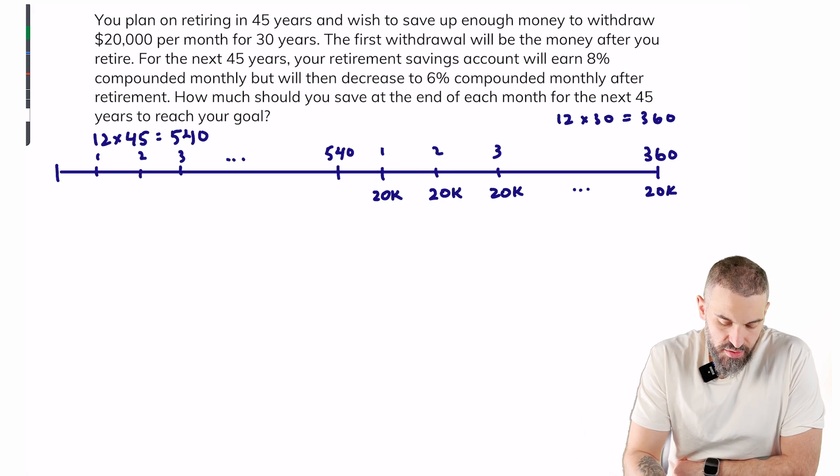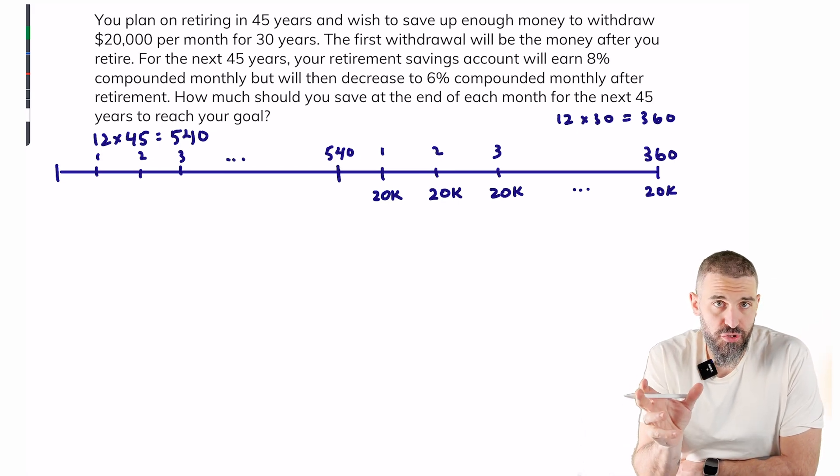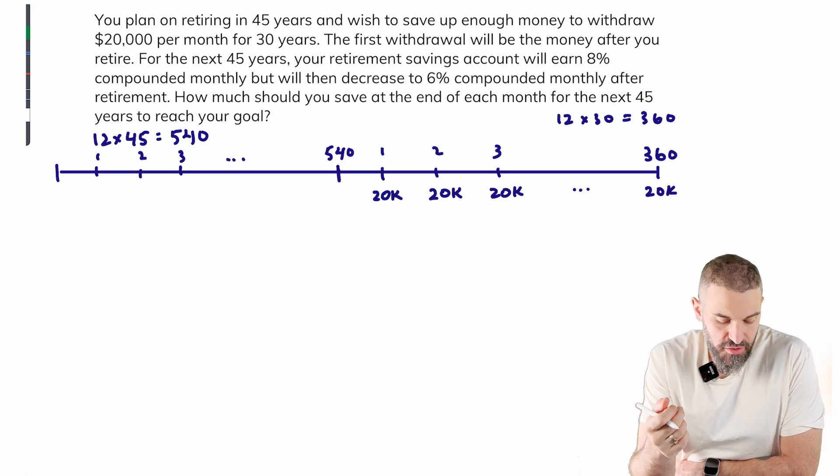So I know I'm going to have several contributions all the way till the day I retire here. So that line here becomes the end of the first portion, the savings portion, so the 540th period. But it's also the beginning of the retirement portion, and that's going to be an important fact as we're solving this question. Now the way to solve these problems is to work backwards from your retirement.